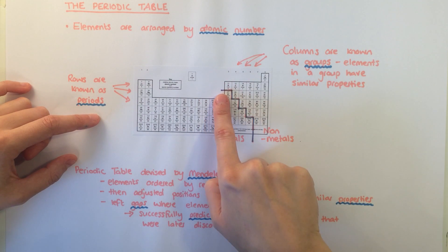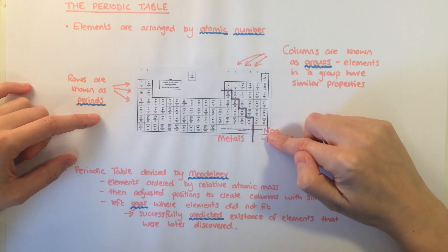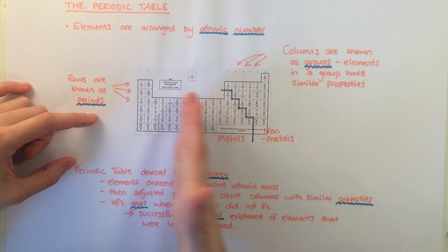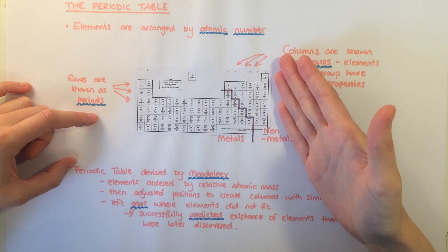You need to know that there is a dividing line that starts underneath boron and moves to the right and downwards like a staircase. To the left of this line all the elements are metals. To the right are all the non-metals.